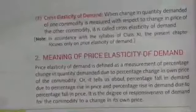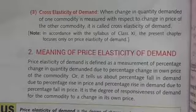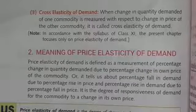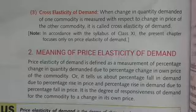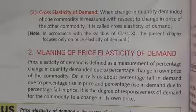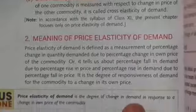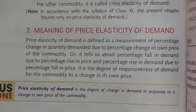The third type is cross elasticity of demand. In this case, the price of the commodity does not change, but the price of other related goods changes. When the quantity demanded of one commodity is measured with respect to the change in price of other commodities, it is called cross elasticity of demand. Here we study only about price elasticity of demand.